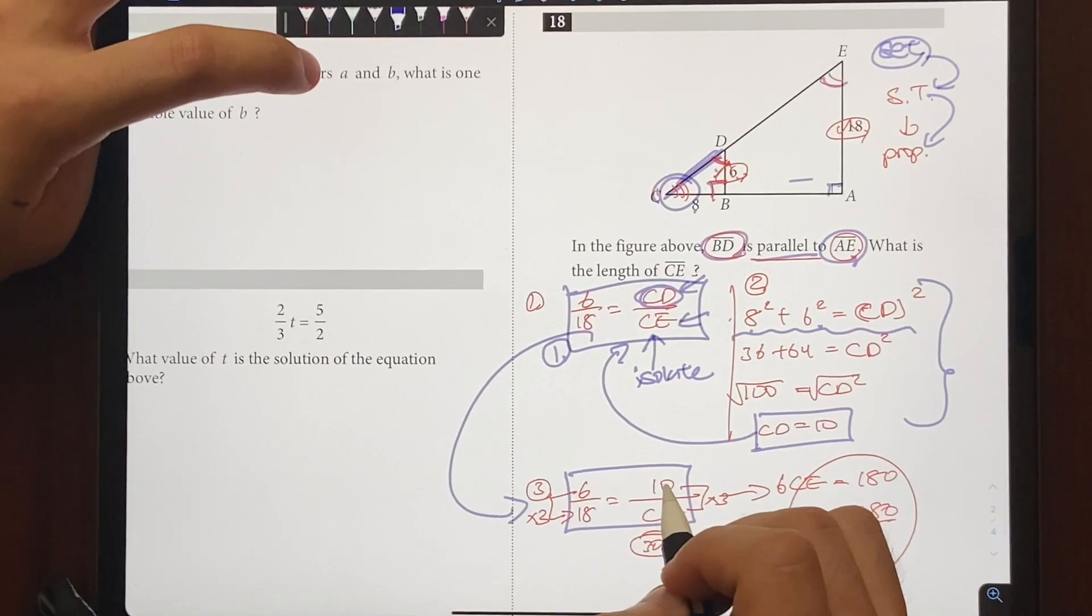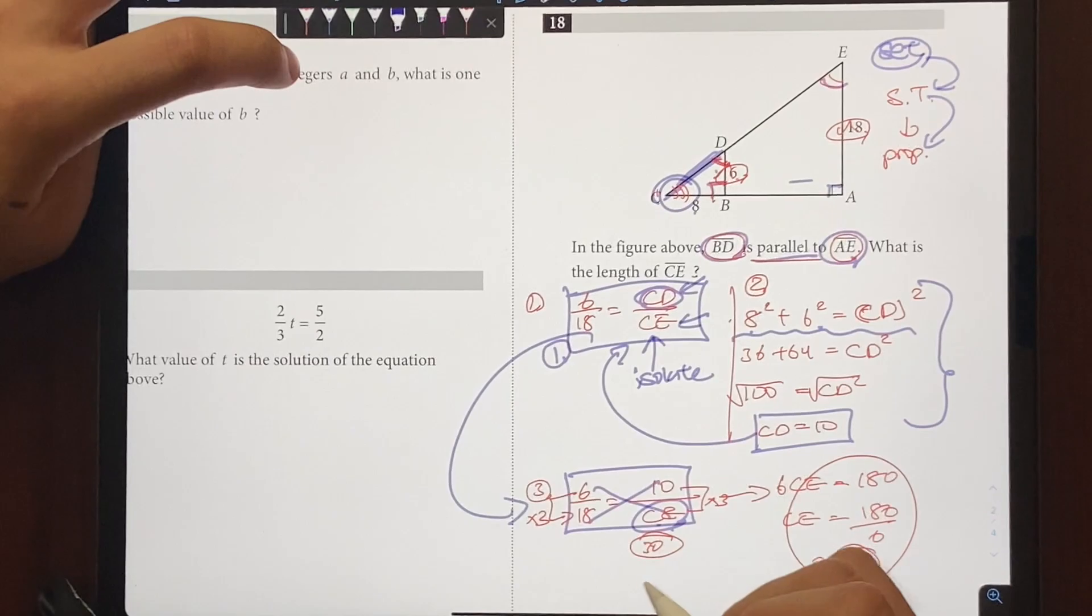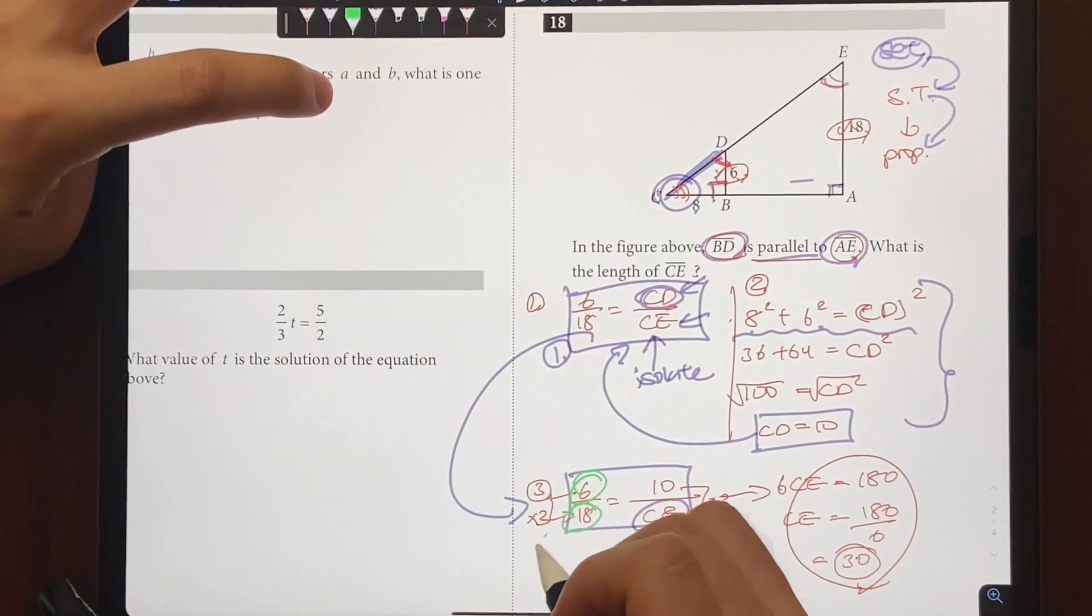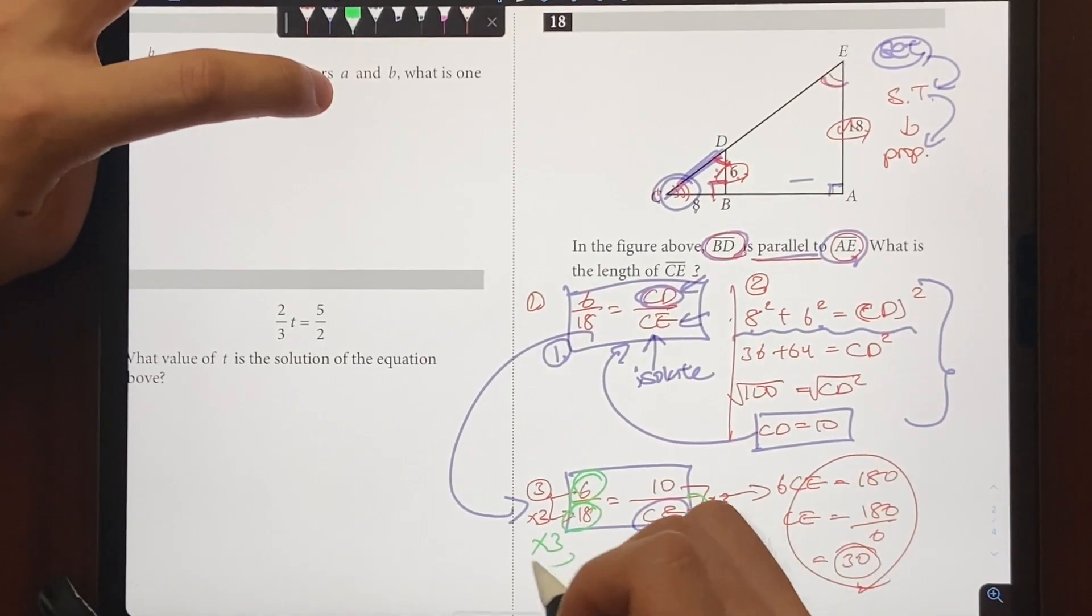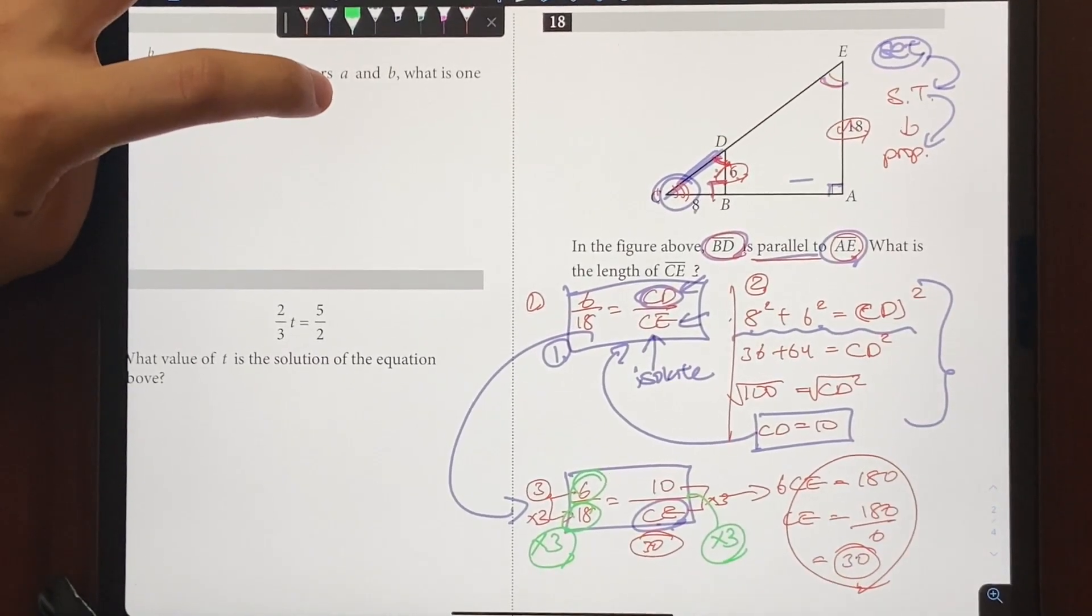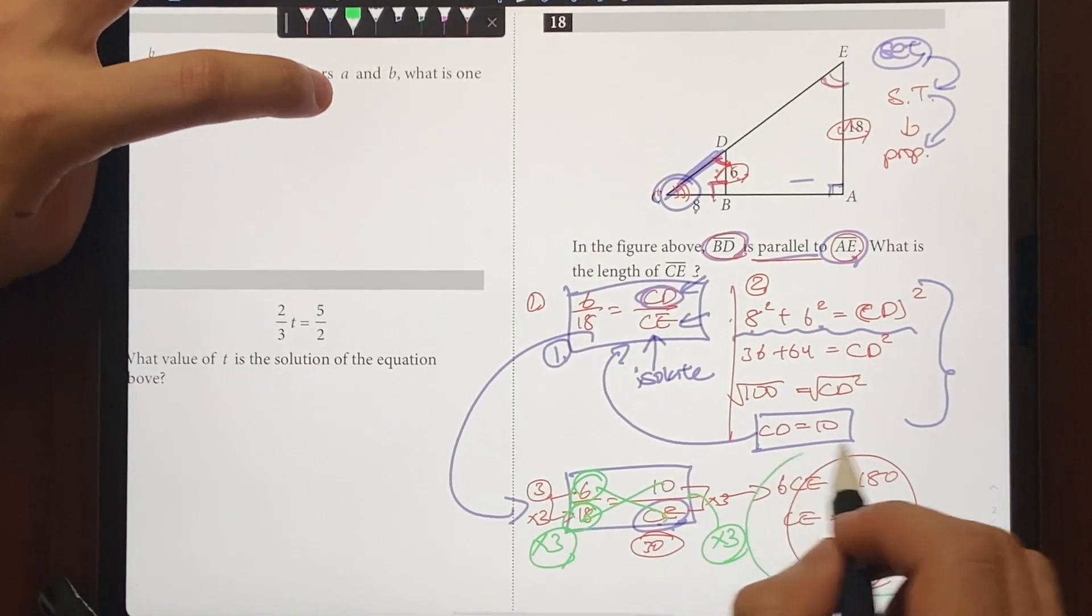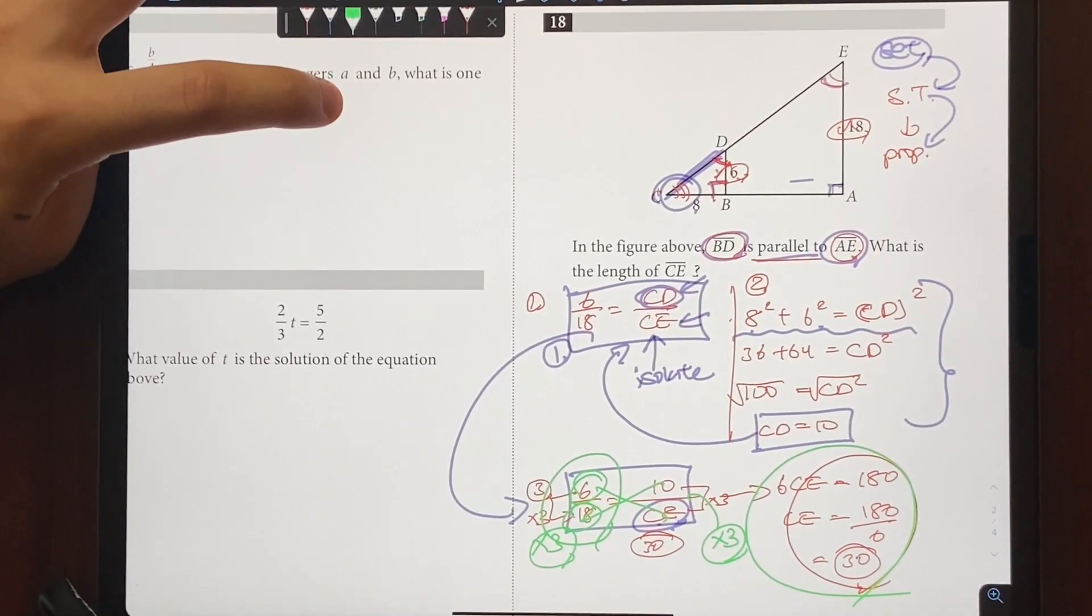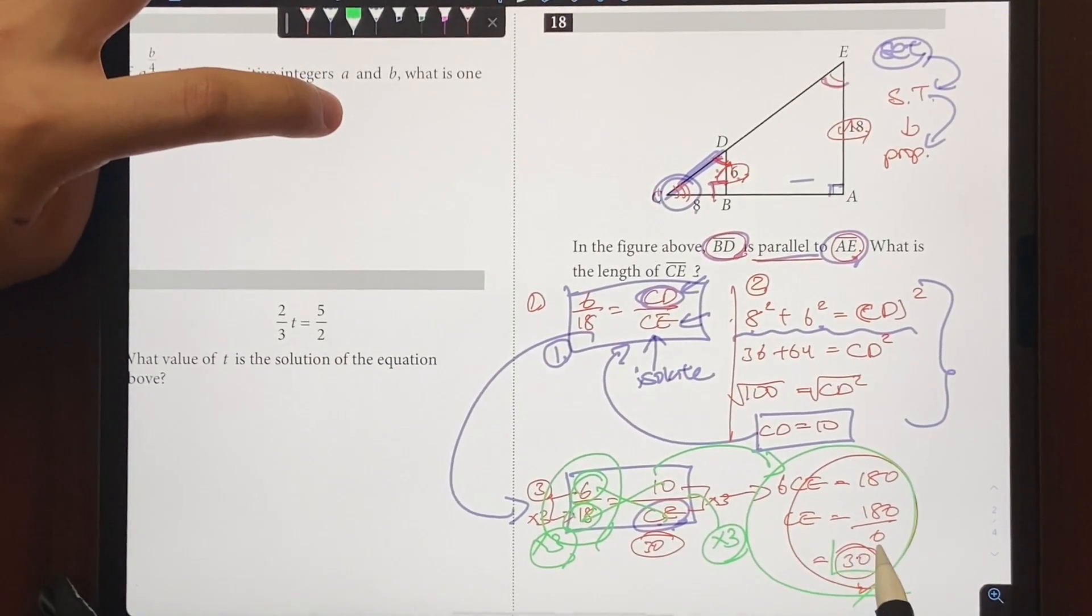And 6 over 18 is equal to 10 over CE. CE is the only unknown variable now. So what do we do? We just cross multiply and find out what CE is equal to. So technically, you could have recognized that 6 and 18 are multiplied by 3. So 10 and CE also got to have the same relationship, right? Because they are going to be proportional. So you could have recognized that. But the traditional method is for you to cross multiply these two numbers and do the math right there. So when the numbers are simple enough, you just want to look at 6 and 18 and recognize what the relationship is. But when there is a complicated relationship, you want to go with the traditional route of cross multiplying to find out the missing side length.